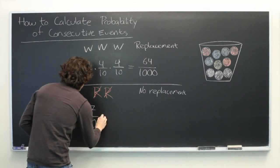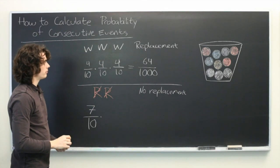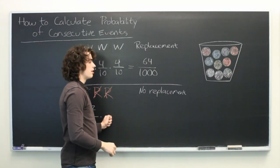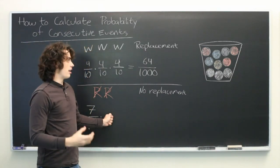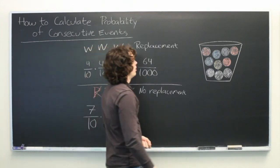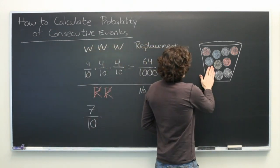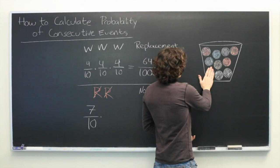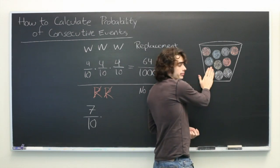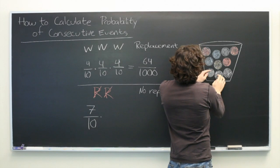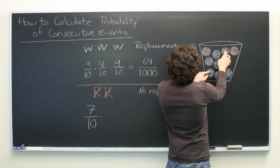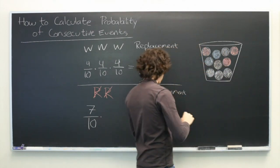But then the second time will be a little bit different. We're assuming here that we've already pulled out a ball that is not red. We can go ahead and eliminate one of them. That means that there are still three red balls in our bucket, but there are only one, two, three, four, five, six non-red balls for a total of nine.